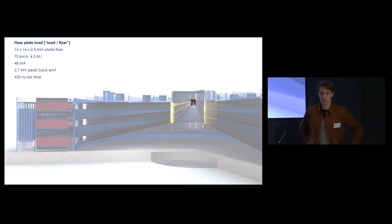Then we are at the load. The optimized design point is a 16 by 16 millimeter flyer, length and width 16 millimeters, two and a half millimeters thick. This machine, when it discharges into that flyer, should accelerate it to 70 kilometers per second carrying 4.3 megajoules of kinetic energy. The peak current delivered is 48 megaamps and the peak back EMF is 2.7 megavolts - that's quite an important number because the voltages we're talking about are actually quite a bit lower than other people for machines of this scale, typically 10 megavolts or more.